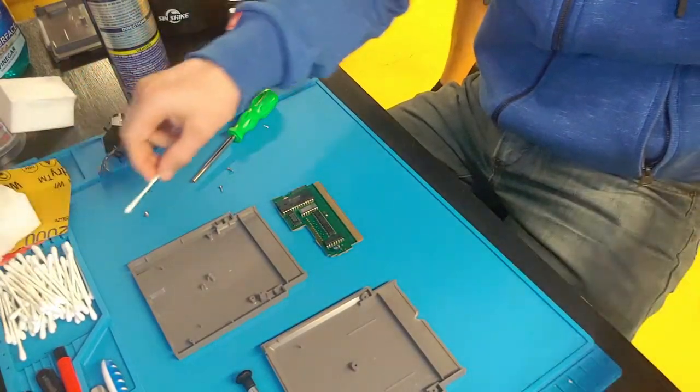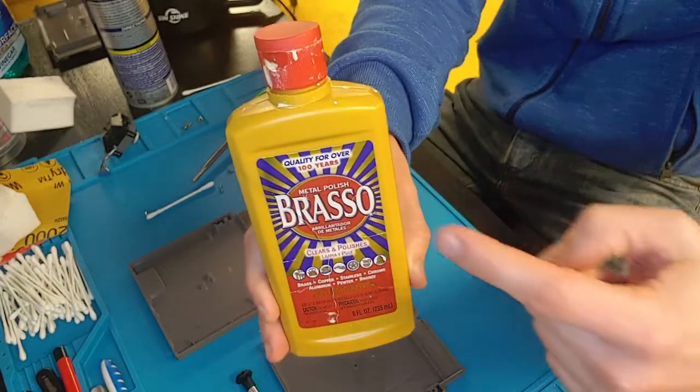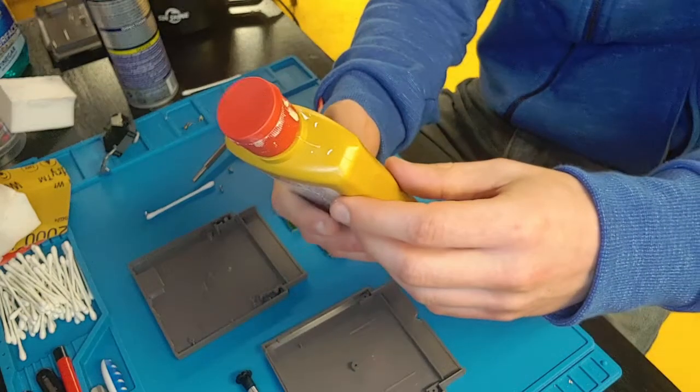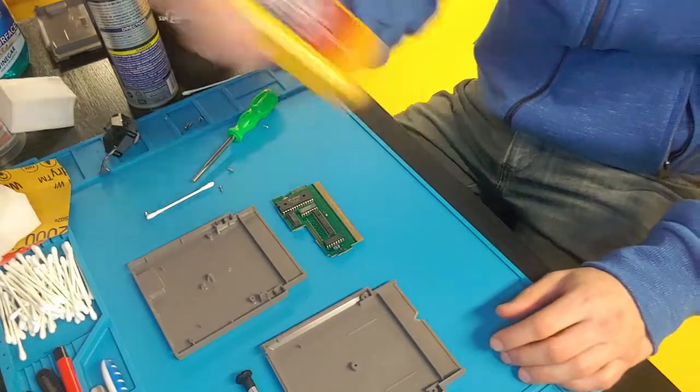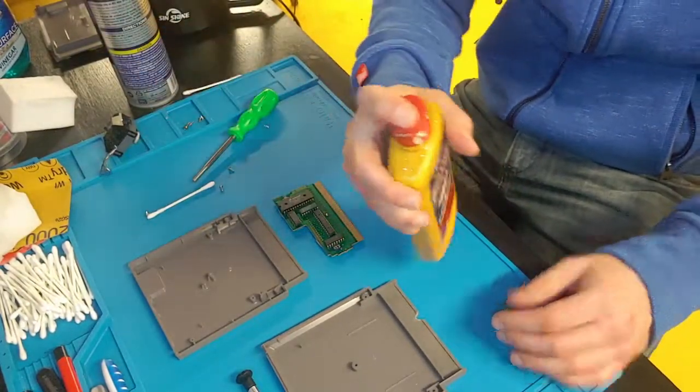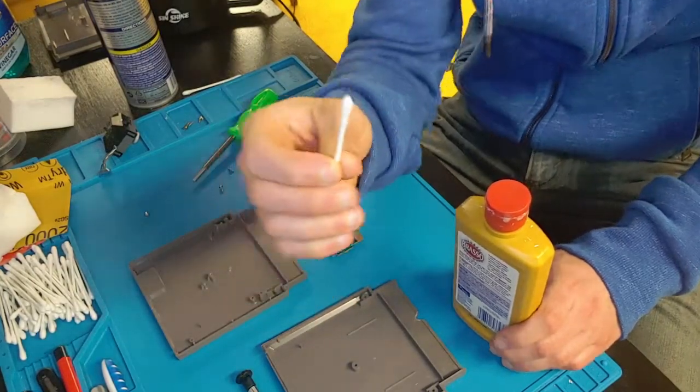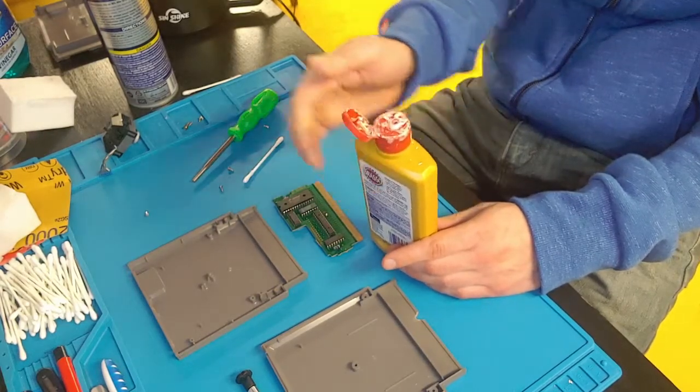So grab a Q-tip. You'll probably need more than one, and your Brasso. Give it a good shake, mix it all up.